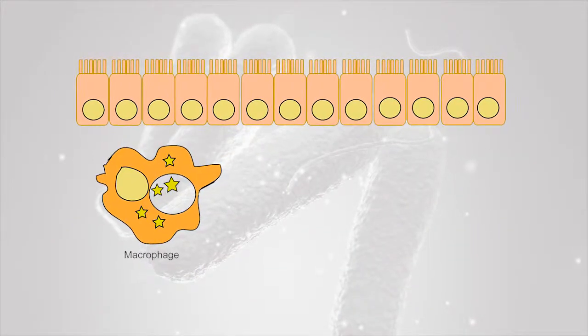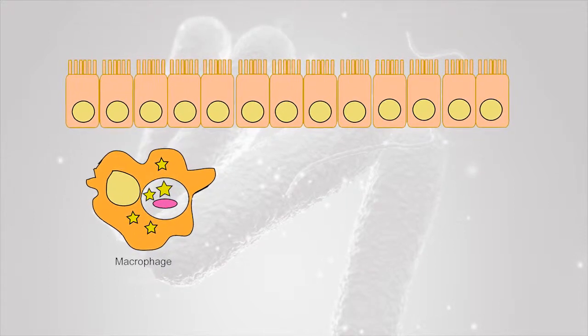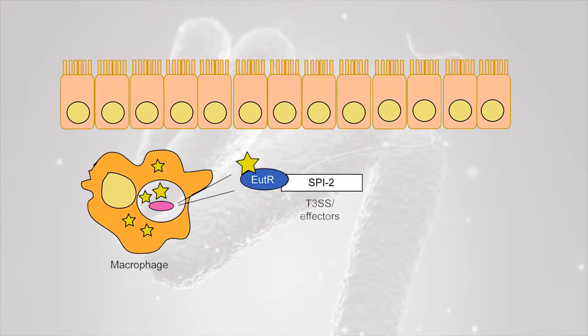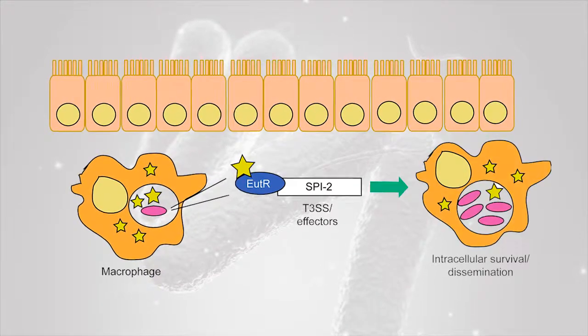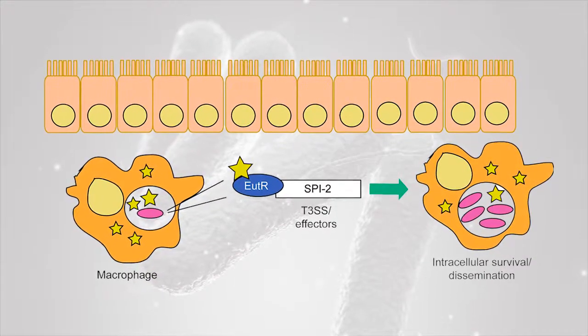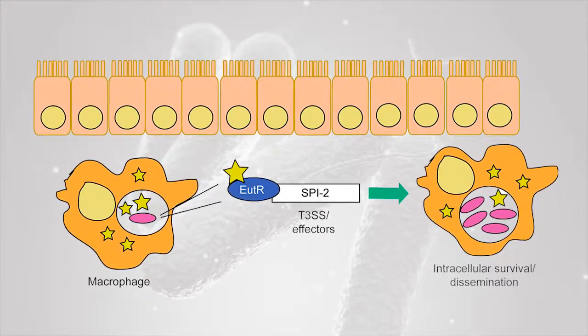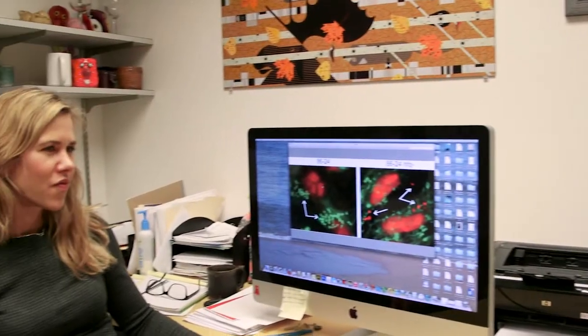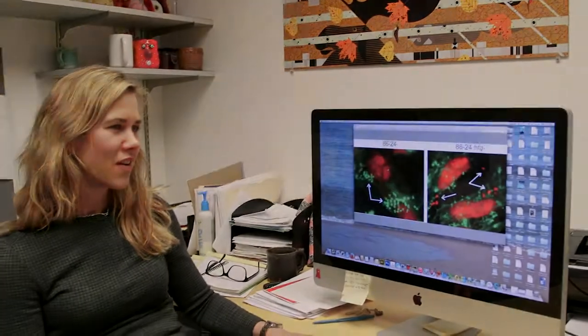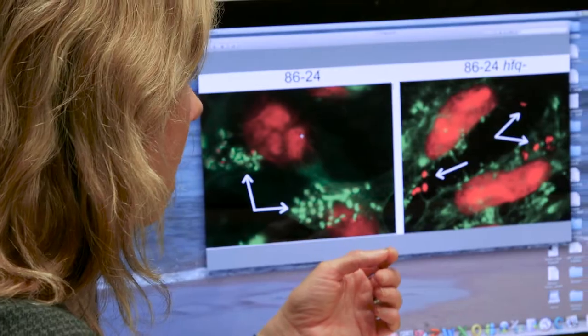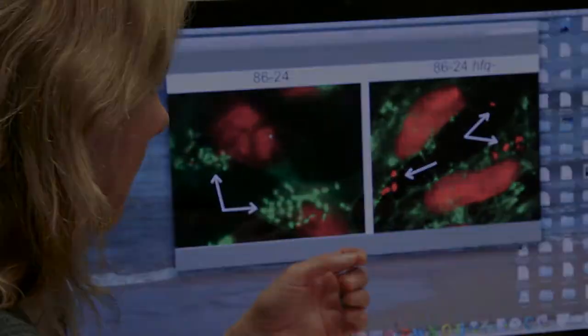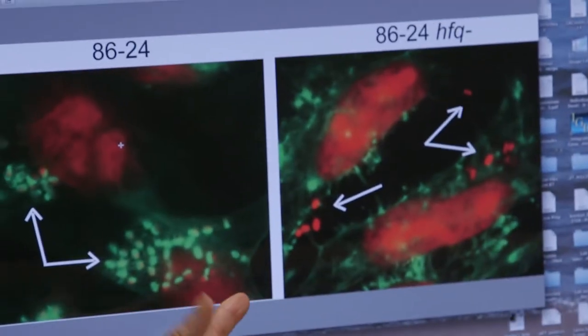In macrophages, Salmonella is basically by itself and it has to change gene expression in order to fight off the defense mechanisms of the macrophages. What we found was it's the same protein that's sensing ethanolamine both in the gut as well as in macrophages, but the regulatory output — the behavior — is different.